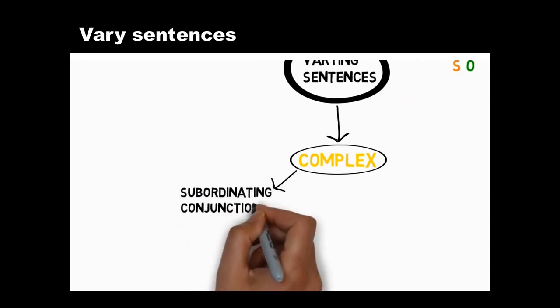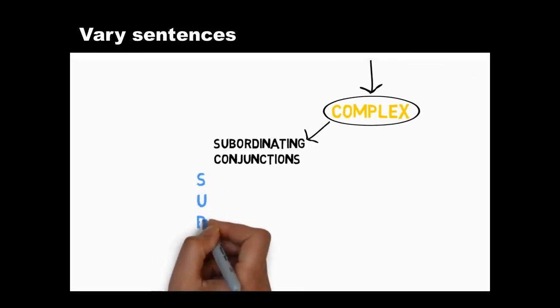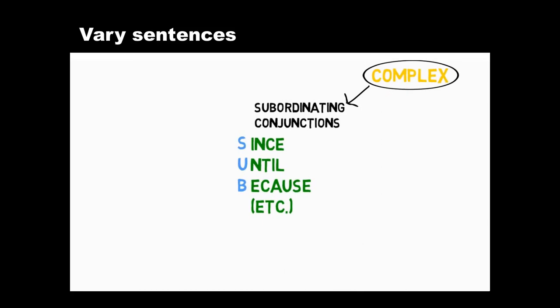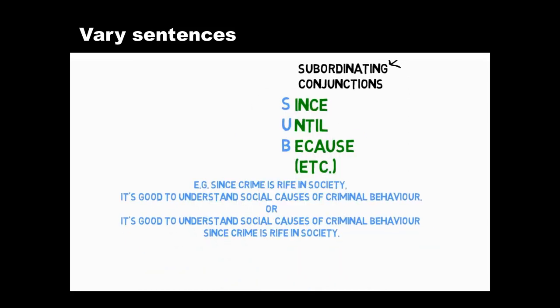First, you can use subordinating conjunctions to join a subordinate or less important idea to a main idea. If you think of the word sub, it will remind you of some examples of subordinating conjunctions. Subordinate clauses can come either before or after independent clauses, as in these examples.